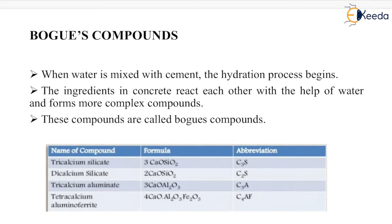The names of the Bogue's compounds are: tricalcium silicate i.e. C3S, dicalcium silicate i.e. C2S, tricalcium aluminate i.e. C3A, and tetracalcium aluminoferrate i.e. C4AF.